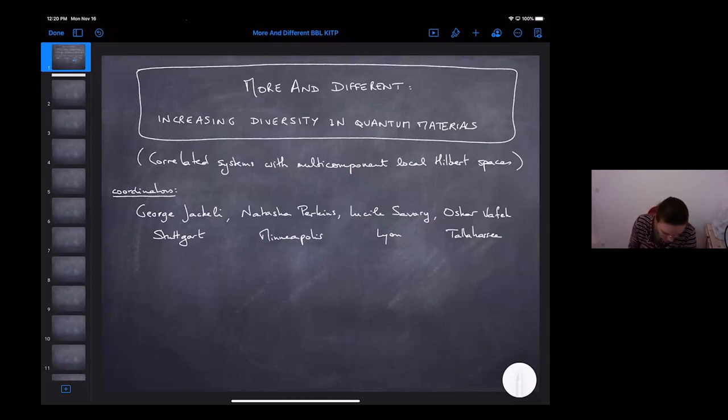So those are four friends. It's George J. Kelly here from Stuttgart University, as well as the MPI Stuttgart. Natasha Perkins from University of Minnesota, Minneapolis. Myself from CNRS and ENS de Lyon. And Oskar Vafek from Florida State University in Tallahassee.